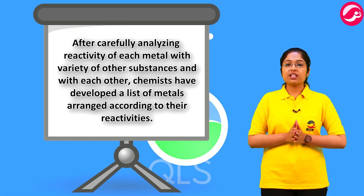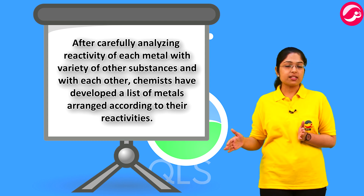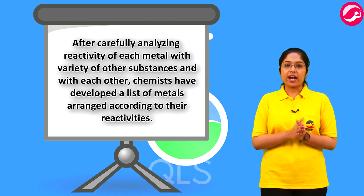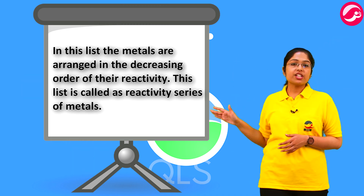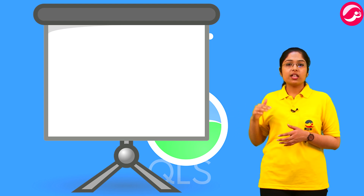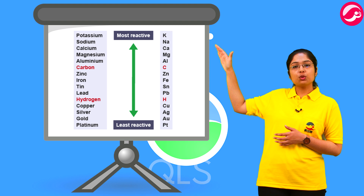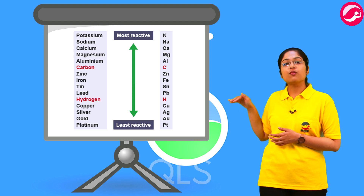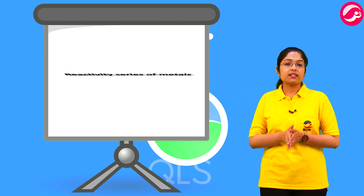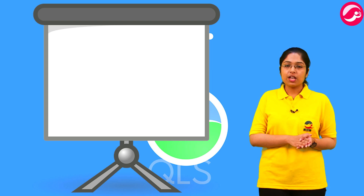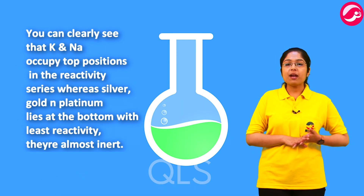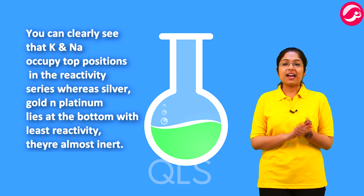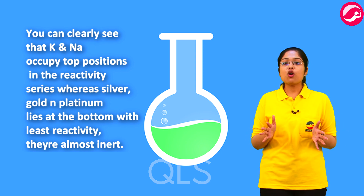By carefully analyzing the reactivity of each metal with various substances and with each other, chemists have developed a list of metals arranged in decreasing order of reactivity — from highly reactive to least reactive. This is called the reactivity series of metals. Sodium and potassium occupy the top positions, while silver, gold, and platinum lie at the bottom with the least reactivity and are almost inert.